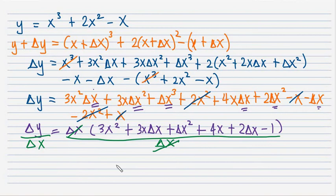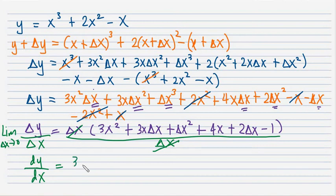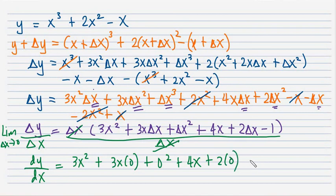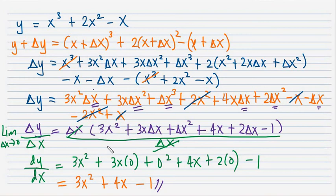Now take the limit of delta y over delta x as delta x approaches 0 — that gives the derivative of y with respect to x. Substituting delta x equals 0: 3x squared plus 3x times 0 plus 0 squared plus 4x plus 2 times 0 minus 1, which simplifies to 3x squared plus 4x minus 1. That is our final answer.